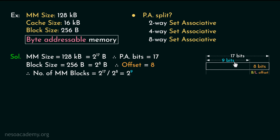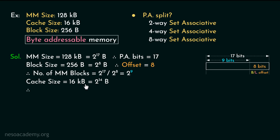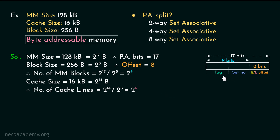Now coming to the cache, the size is given as 16 kilobytes which can also be written as 2 to the power 14 in terms of bytes, because 16 is 2 to the power 4 and kilobyte is 2 to the power 10. The number of lines inside the cache can be found by dividing the cache size by the block size, which gives us 2 to the power 6, because 14 minus 8 is 6. Now let's find out the set number bits and the tag bits for all these organizations.